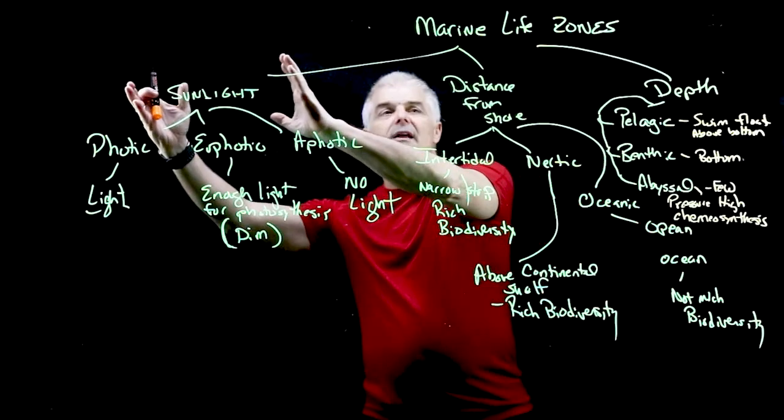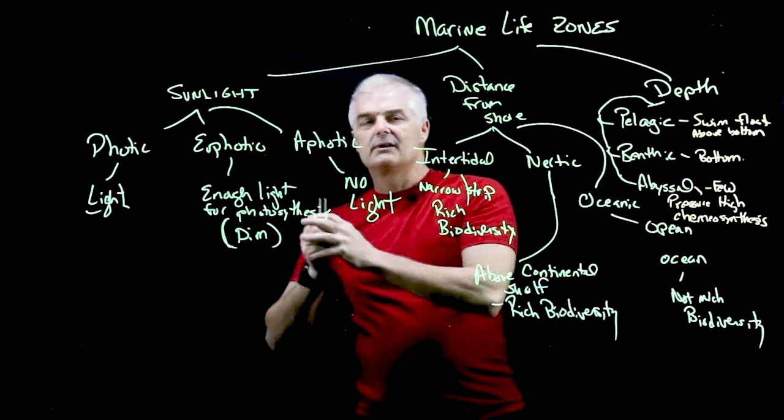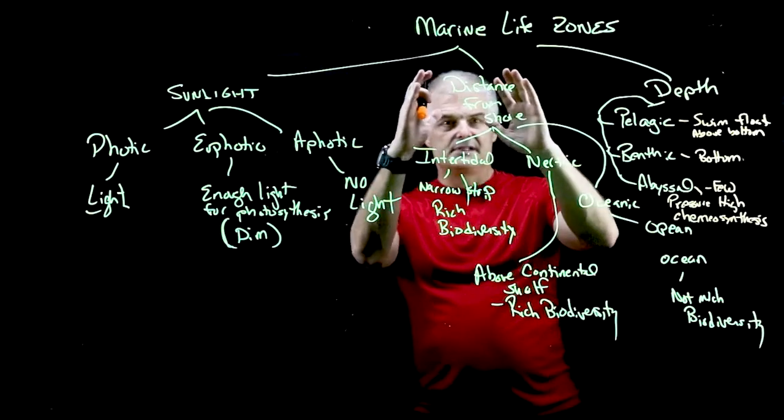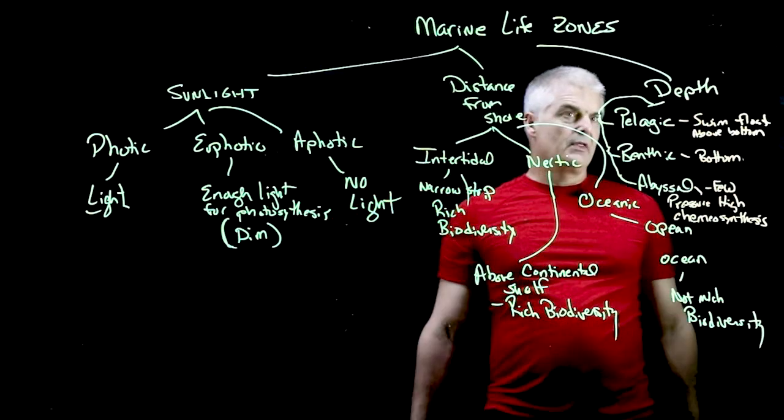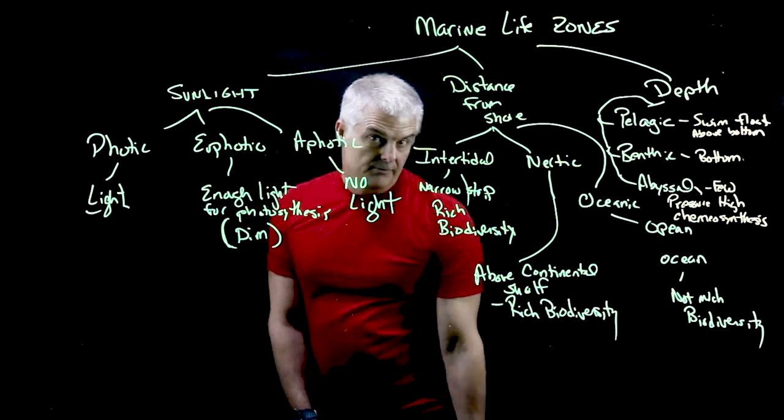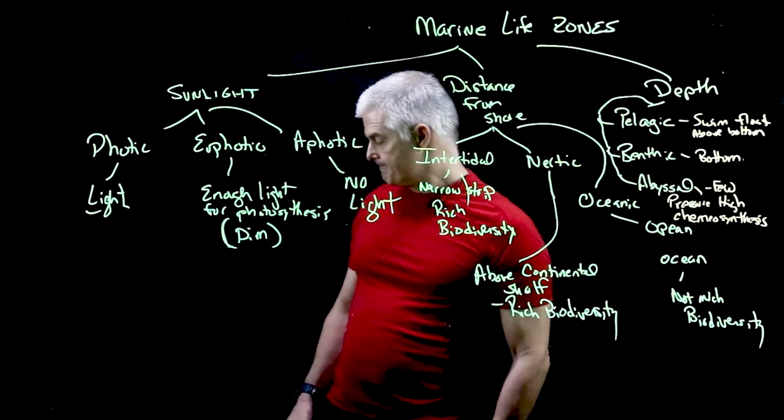So the big ideas are: sunlight is one way to look at ocean zones, distance from shore is another, and depth is the third. Houston, we don't have a problem — we'll see you in class.